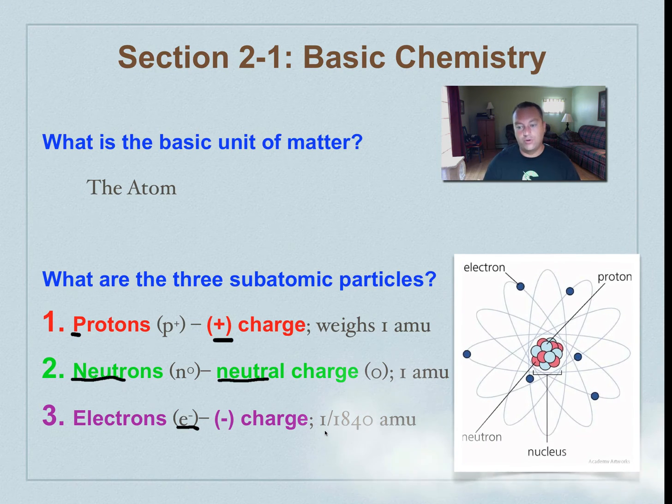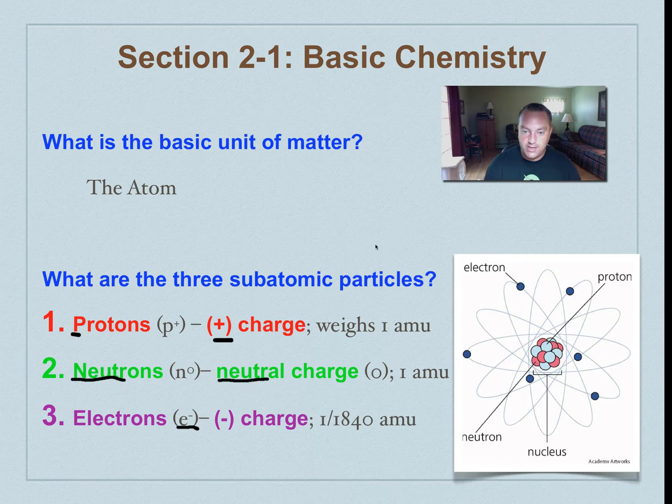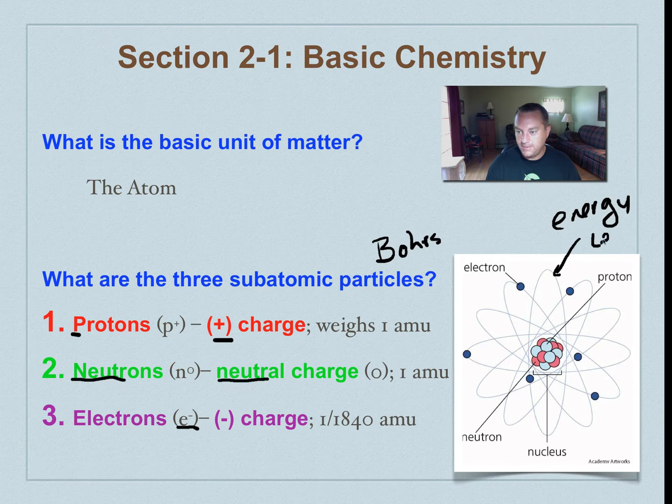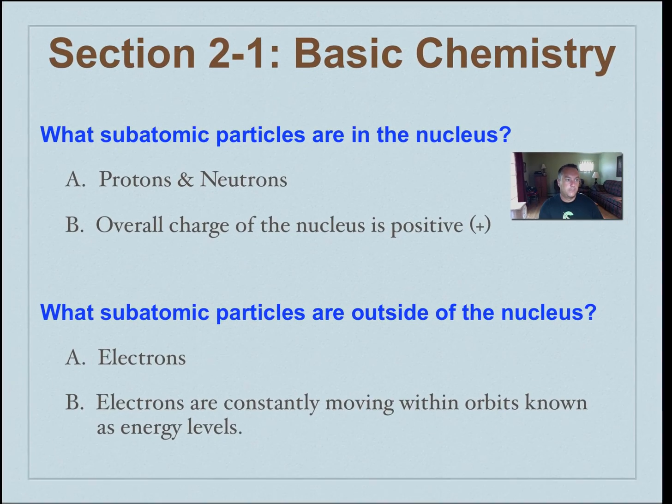So let's look at a Bohr's model of an atom. And this model was created by Niels Bohr back in the first half of the 20th century. And it's really easy for us to understand. Think of the nucleus as the sun, and the nucleus is made out of protons and neutrons, and then orbiting around it in these things called energy levels. And these electrons are moving very, very fast. Think of planets going around the sun. And the farther you get away from the nucleus, the more energy you have, and the closer you get to the nucleus, the less energy that you have.